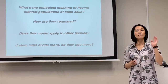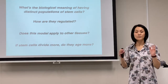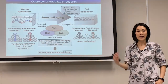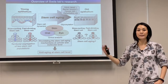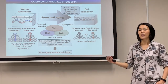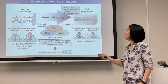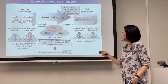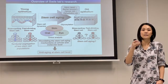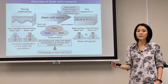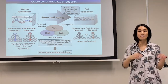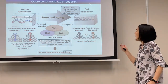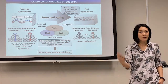Finally, if stem cells divide more, do they age more? In my lab, we use skin, cornea, and eye — those three epithelial tissues as a model — to address what's the property and role of slow cycling cells and fast dividing stem cells during normal tissue turnover, injury repair, or early development in young tissues, and how they change in the process of aging.